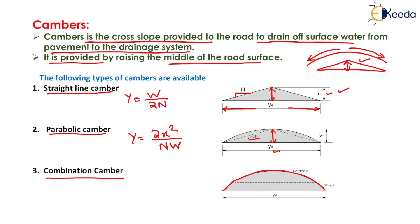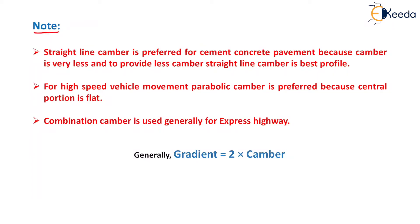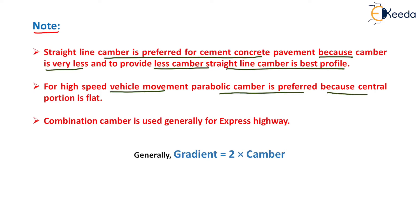Straight line camber is preferred for cement concrete pavement because camber is very less in the case of rigid pavement, and straight line camber is the best profile for providing very less camber. Parabolic camber is preferred for high speed vehicle movement because the central portion is flat. Combination camber is generally used for expressways.